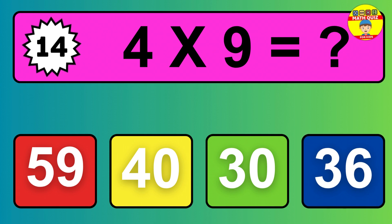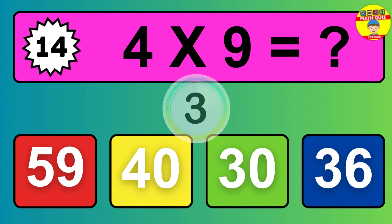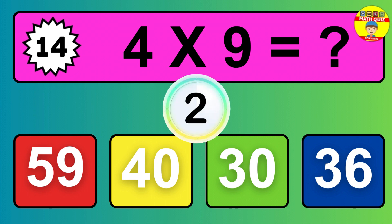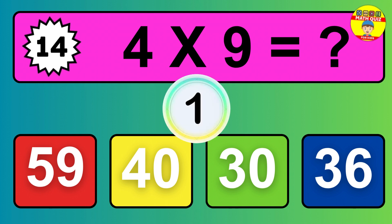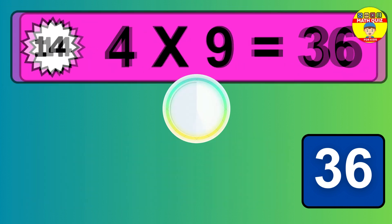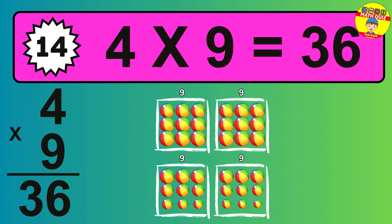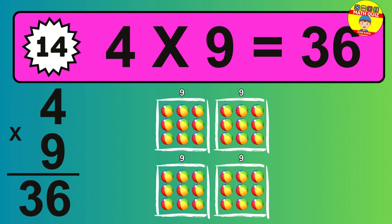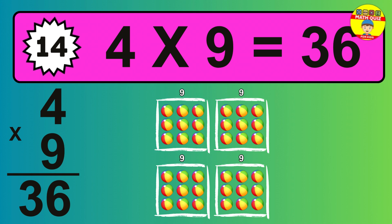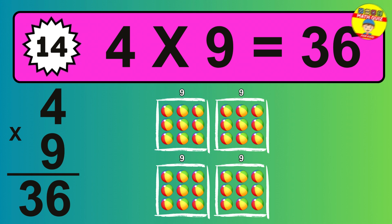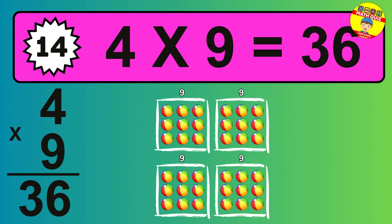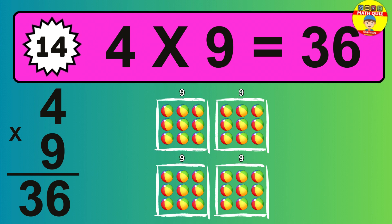Question 14. The answer is 4 times 9 is 36. To calculate, we have 4 groups with 9 balls each one. So how many balls do we have? 36 balls.